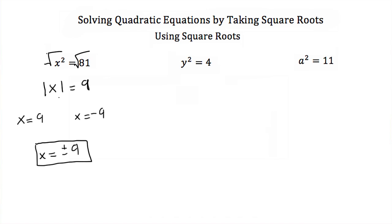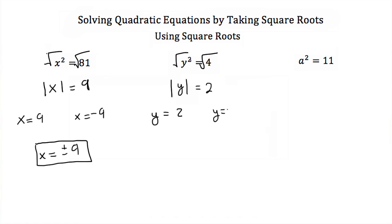These are my two solutions for x squared equals 81, and I can also write these as x is equal to plus or minus 9. For our next example, if we have y squared is equal to 4 and I wanted to solve for y, I take the square root of both sides. I end up with the absolute value of y equal to 2. Dropping the absolute value gives y is equal to 2 and y is equal to negative 2, or y is equal to plus or minus 2.